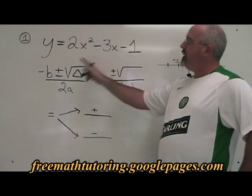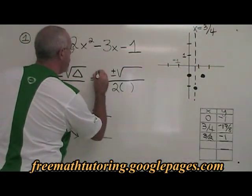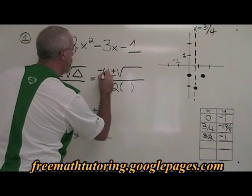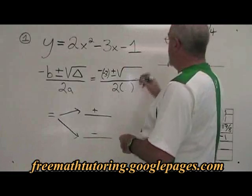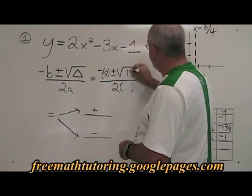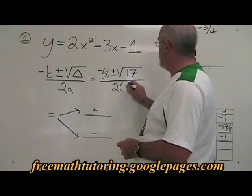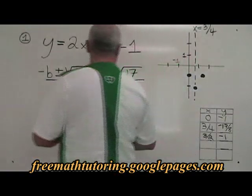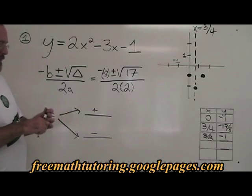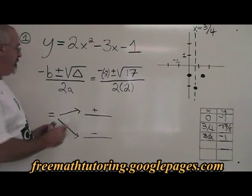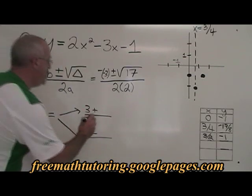Our b is negative 3, so negative of b is negative of negative 3. Our delta was 17, so we put 17 inside the radical. And our a is 2, so the bottom is 2 times 2. The negative of negative 3 is positive 3. 2 times 2 is 4.